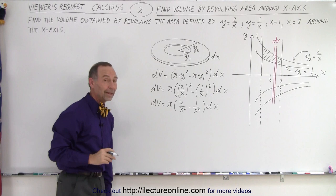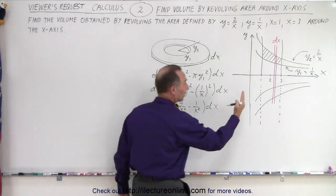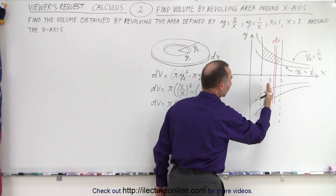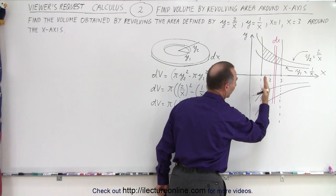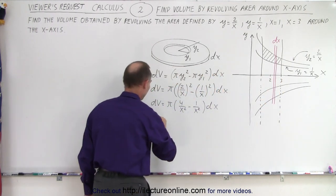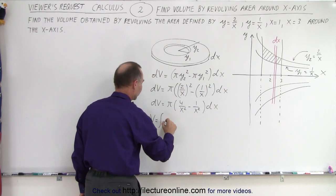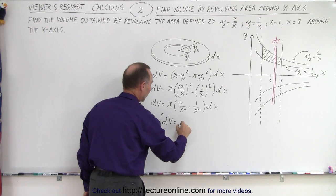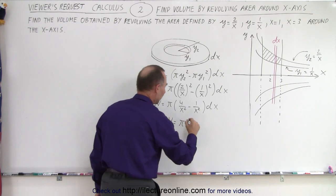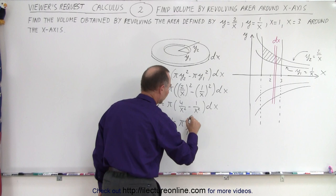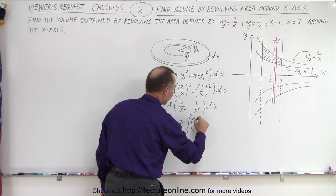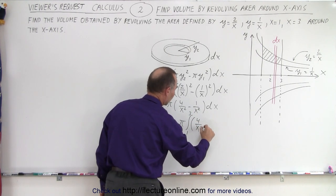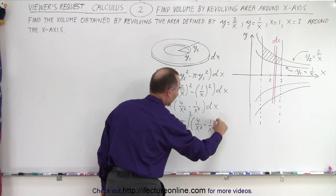So there's our volume element. Now to get the full volume, we want to integrate an infinite number of little disks like that from x equals 1 to x equals 3. The volume is equal to π times the integral from x equals 1 to x equals 3 of 4/x² minus 1/x² times dx.